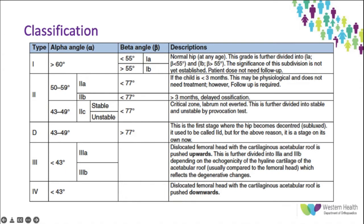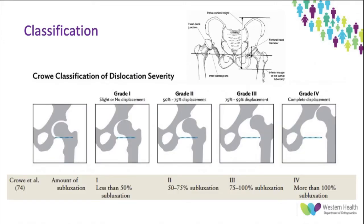Moving on to classifications: in pediatric hip dysplasia, ultrasound can provide both a dynamic assessment of the hip using the Harcke method and produce the Graf classification, which is quite complex. Moving into adult hip dysplasia, the two most common classification systems are the Crowe and the Hartofilakidis systems. The Crowe classification details proximal displacement of the femur relative to the vertical height of the pelvis and proximal migration of the head-neck junction away from the inter-teardrop line, and can also be used to guide reconstructive options and component selection in arthroplasty.